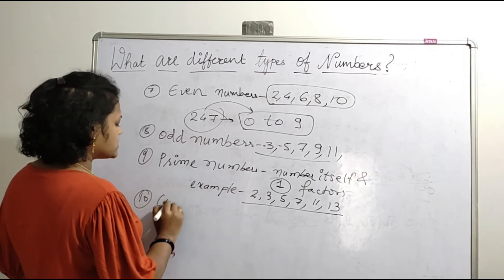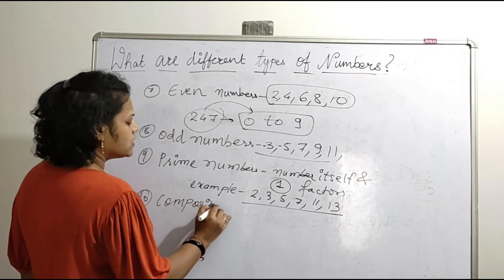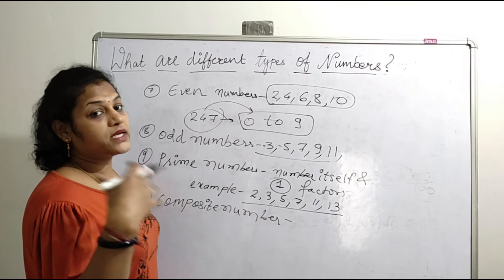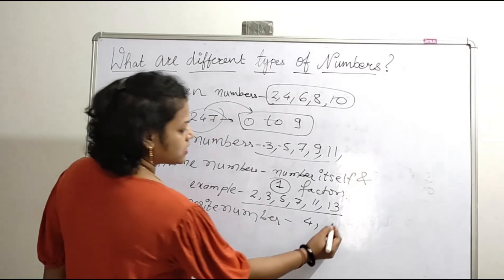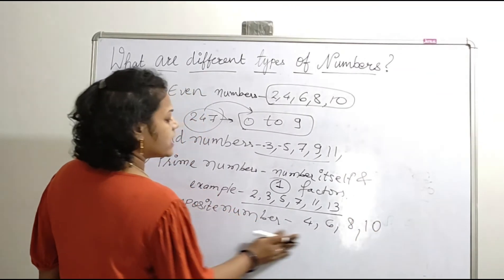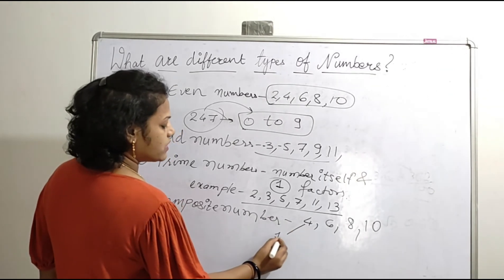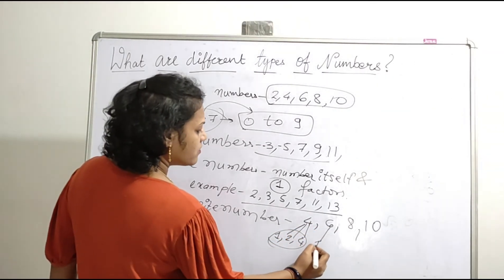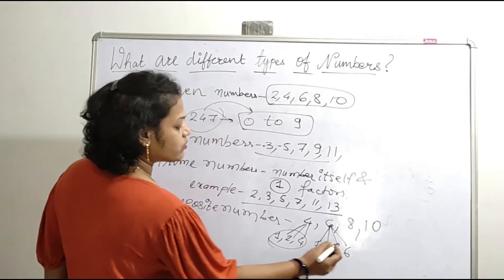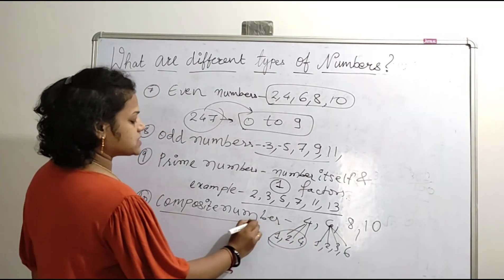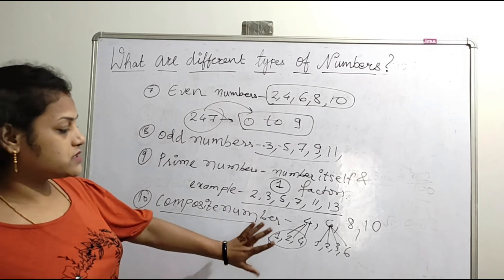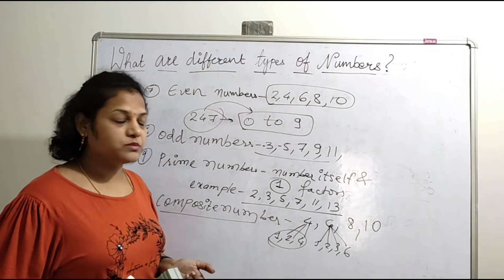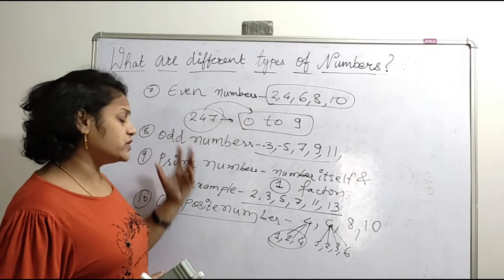Next, we will see about composite numbers. Composite numbers are those which have more than 2 factors. For example, 4 is divisible by 1, 2, and 4 itself — so it has more than 2 factors. Similarly, 6 has factors 1, 2, 3, and 6. So 4, 6, 8, and 10 are composite numbers because they have more than 2 factors. In this way, you can differentiate between the different types of numbers.